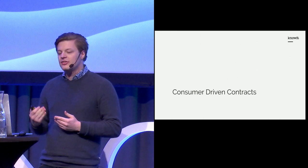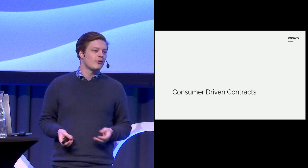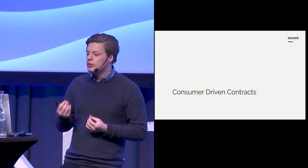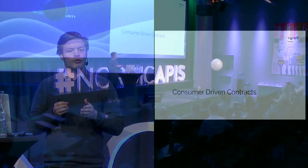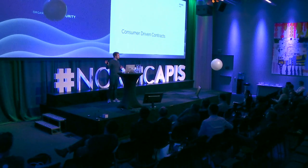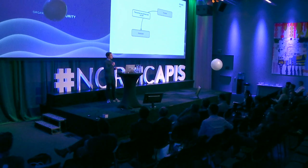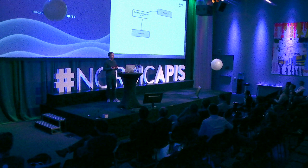Consumer-driven contracts is a testing paradigm where providers of an API encourage consumers to write integration tests for them. In return, the consumer can be certain that the provider will not make any unwanted changes to the part of the API they are using. Consumer-driven contract tests are exactly like regular integration tests, but runnable from the provider side. This expands the relationship to also include consumer contracts.